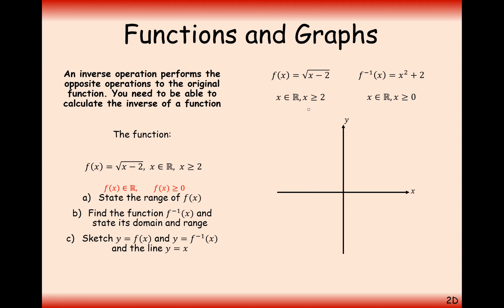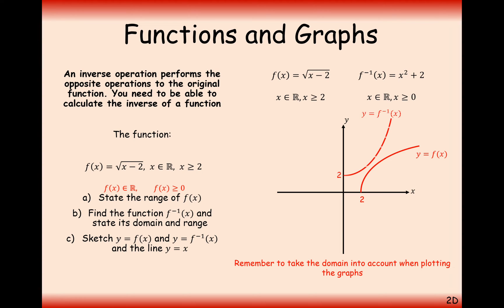Let's look at drawing the graphs now. For the original function, we're only drawing from the x-coordinate of 2 upwards. For the inverse function, we're only drawing from x equals 0 upwards — when we substitute x equals 0 we get 2. Drawing in the line y equals x, we can clearly see that there is a reflection in the line y equals x.